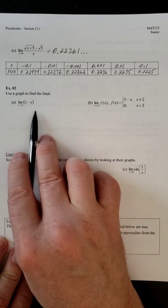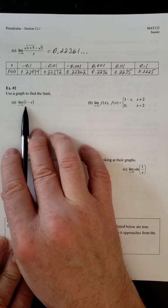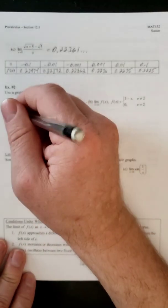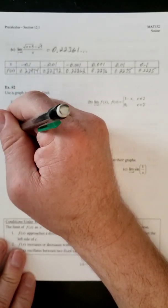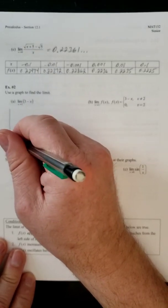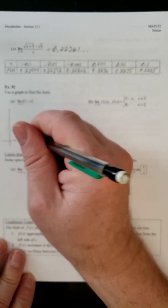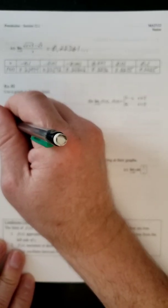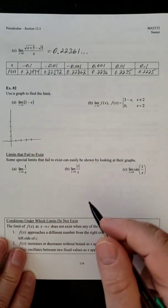So let's start off with a simple one. We've got the limit as x approaches 2 of 3 minus x. So if we just draw a quick sketch of 3 minus x.